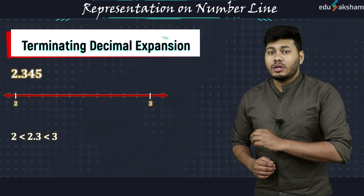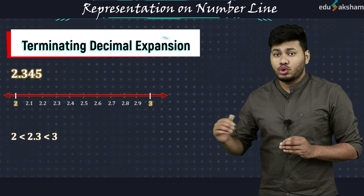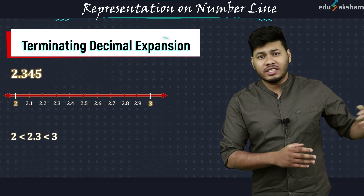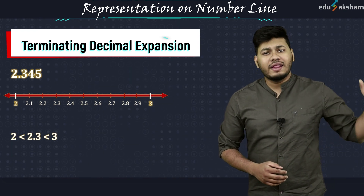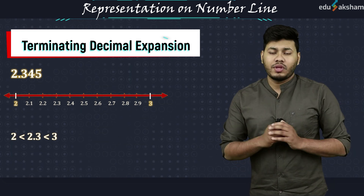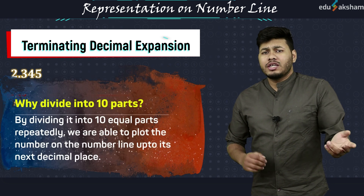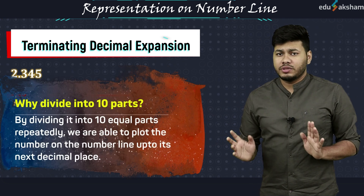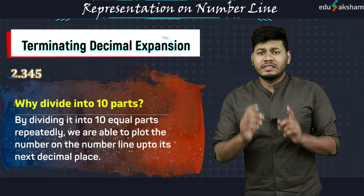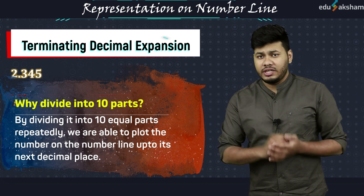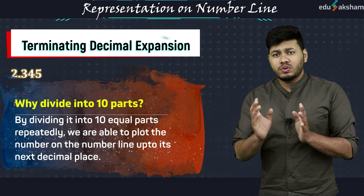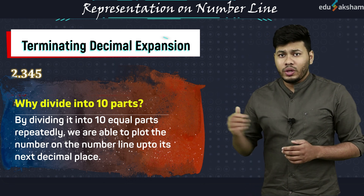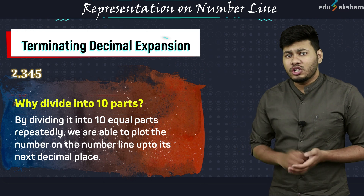These 10 equal parts will be marked as 2.1, 2.2, 2.3 and so on up to 2.9, and then we have 3. We divided it into 10 equal parts because we wanted to consider up to the first decimal place, and we can see 2.3 right here.